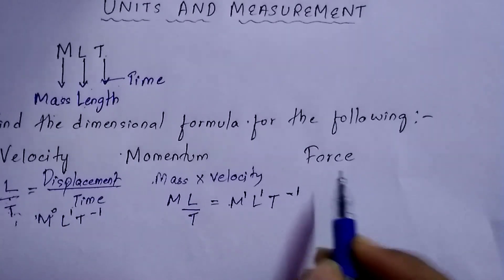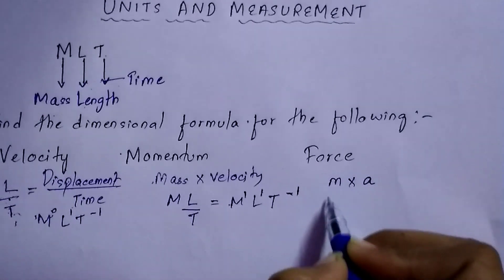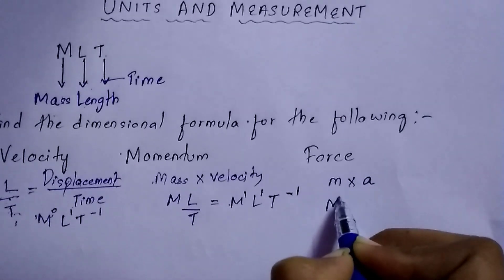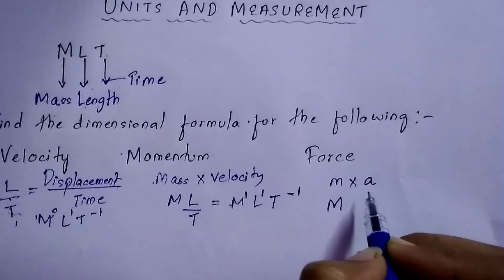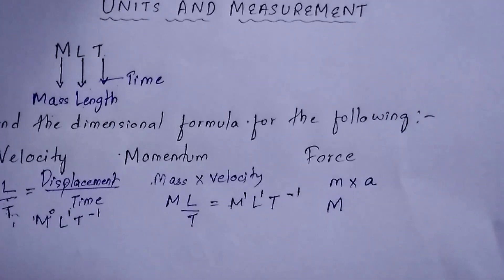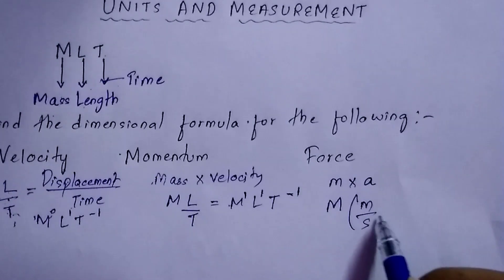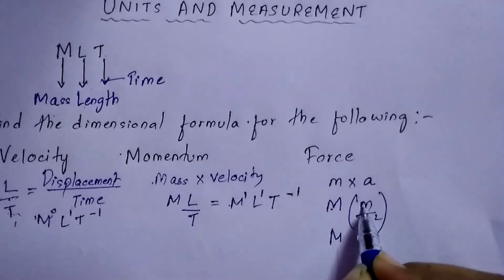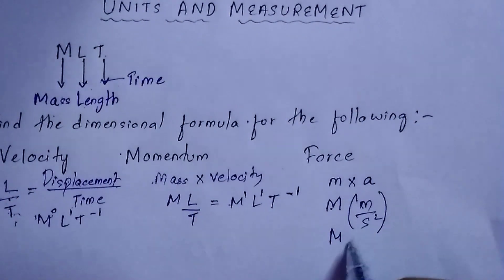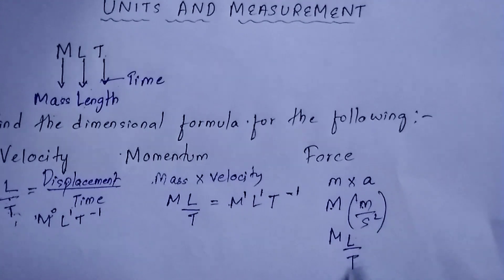Force is mass into acceleration: M into A. Mass is M, and acceleration is the rate of change of velocity with time, which is meter per second squared. Meter is length so it is L, and second squared is T squared, so acceleration is L/T².